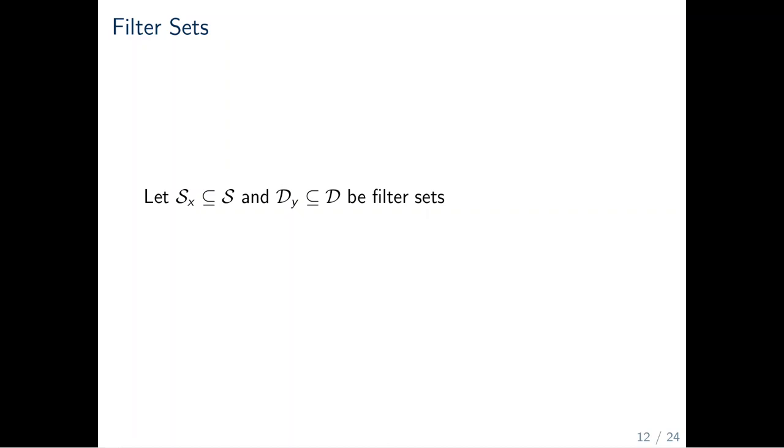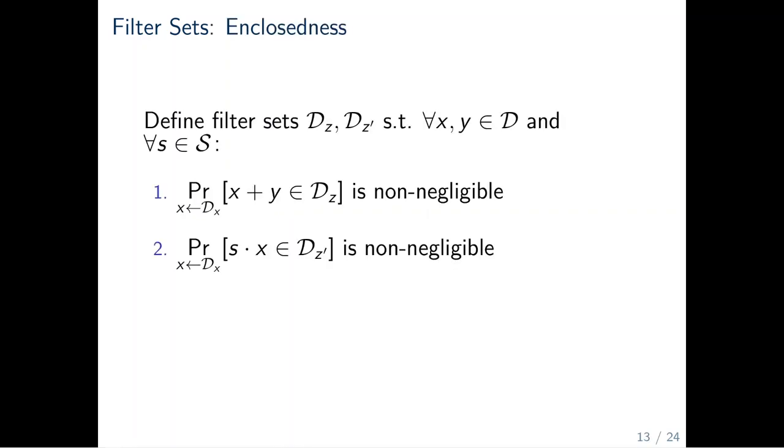For every variable defined in the scheme, we define a filter set, which is a subset of either the set of scalars S or the domain D. From the filter sets, we require the closeness property. We say, a linear hash function is delta closed if the addition and scalar multiplication of certain variables lies in a specific filter set. This relates to the correctness error of the blind signature scheme. The better this probability, the smaller the correctness error.